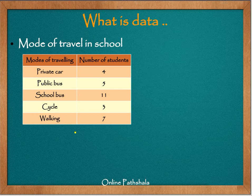Let's look at the next example. Here we have numbers 4, 5, 11, 3, 7, which are absolute numbers representing the number of students. We are trying to associate them with the modes of their travelling to school. 4 students travel by private car, 5 by public bus, 11 by school bus, 3 by cycle, and 7 by walking. So we can say that the most popular mode of travel is the school bus, and the least popular is by cycle.